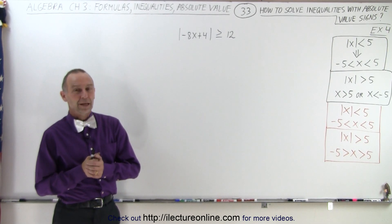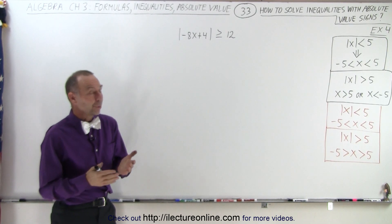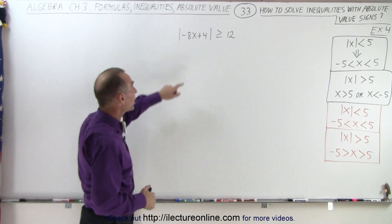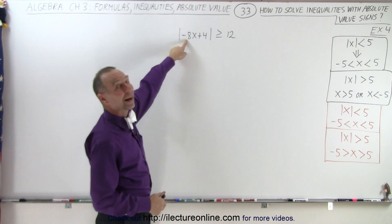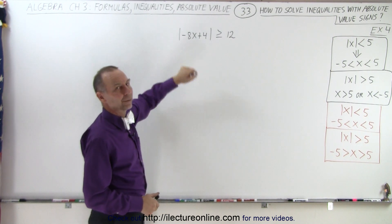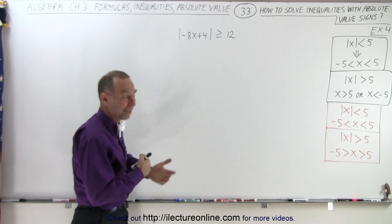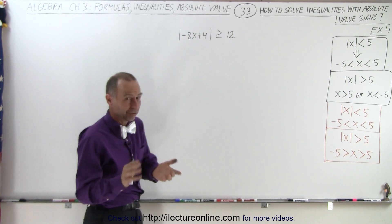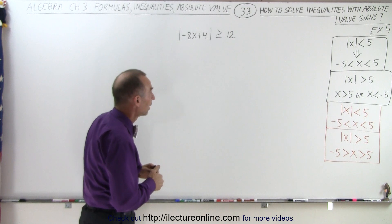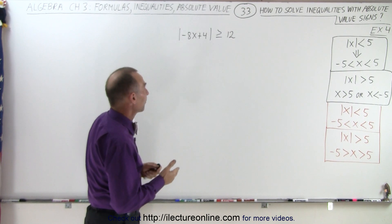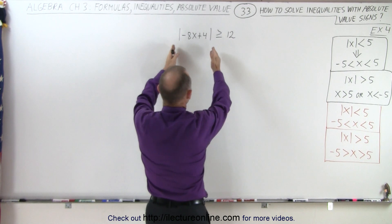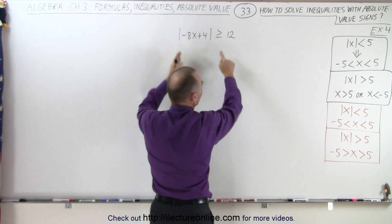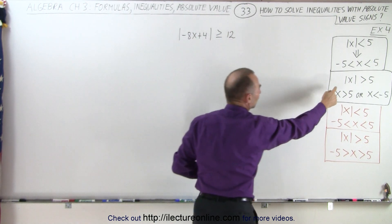Welcome to our lecture online. On our next example we did something similar before, but we changed the plus 8x to a minus 8x here, with the idea that we're going to have to divide by a negative number, and so we'll have to flip the inequality symbols. But here we have to recognize that we have something between absolute value symbols is greater than or equal to 12, which is case number 2.